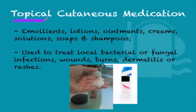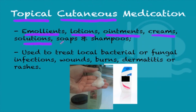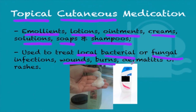Now I'm going to talk about topical, also known as local, cutaneous medication. Cutaneous means on the skin — in the hair, on the head, the body, or around the pubic area. Different forms include emollients, lotions, ointments, creams, solutions, soaps, and shampoos, depending on where on the body you are. These are used to treat local bacterial or fungal infections, to treat or help prevent infection of wounds, to help heal burns, dermatitis, or types of rashes.